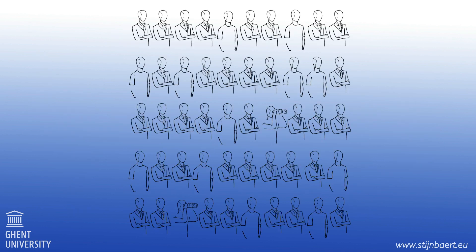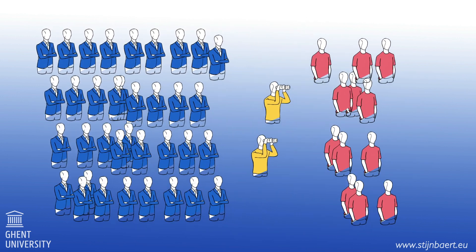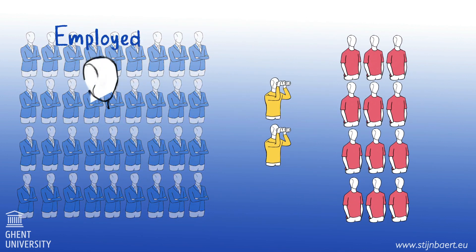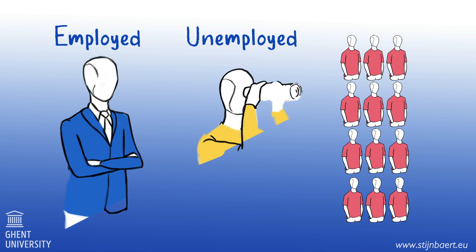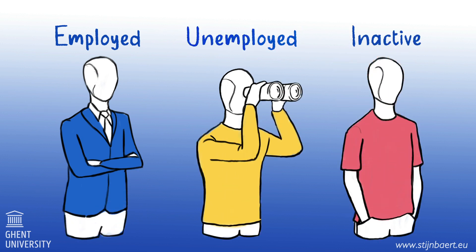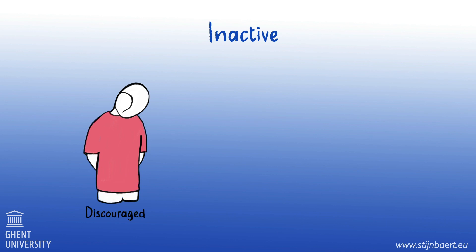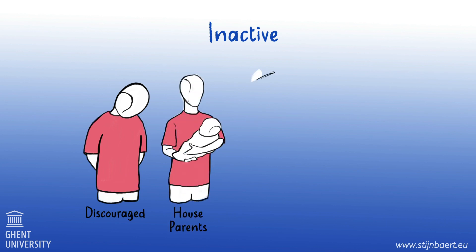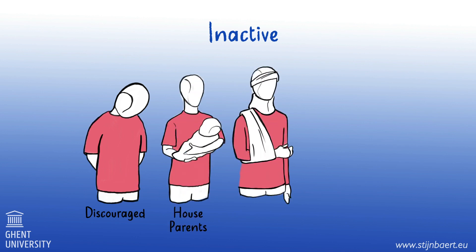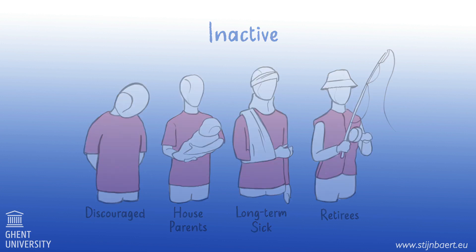Firstly, we need to divide the population into three groups: the employed, unemployed, and inactive. Unemployed people do not have a job but are looking for one. Inactive people also do not have a job but are not looking for one either. These include the discouraged unemployed, house husbands and housewives, the long-term sick, and early retirees.